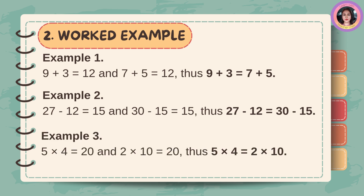Example number 3: 5 times 4 is equal to 20, and 2 times 10 is equal to 20. Thus, 5 times 4 is equal to 2 times 10.